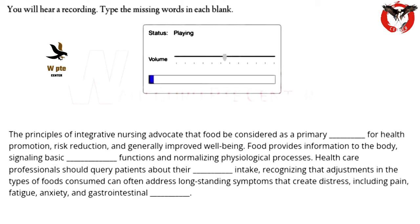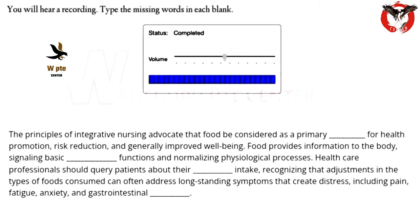The principles of integrated nursing advocate that food be considered as a primary intervention for health promotion, risk reduction, and generally improved well-being. Food provides information to the body, signaling basic biological functions and normalizing physiological processes. Health care professionals should query patients about their nutritional intake, recognizing that adjustments in the types of foods consumed can often address long-standing symptoms that create distress, including pain, fatigue, anxiety, and gastrointestinal dysfunction.